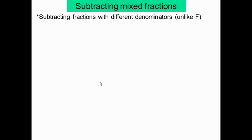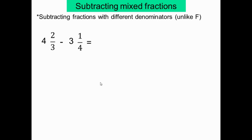Maintenant on va voir les fractions mixtes ou mixed numbers avec des dénominateurs différents — ce sont des unlike fractions. Fraction avec le même dénominateur, ce sont des like fractions. Fraction avec des dénominateurs différents, ce sont des unlike fractions. La chose à faire: on soustrait d'abord les entiers: 4 moins 3 égal 1. Ensuite on cherche le LCM pour les dénominateurs 3 et 4.